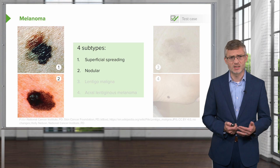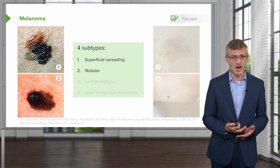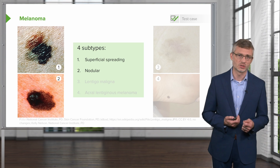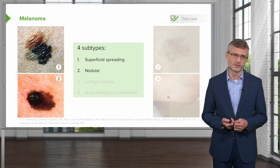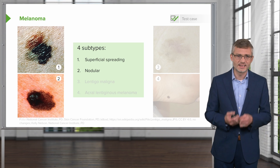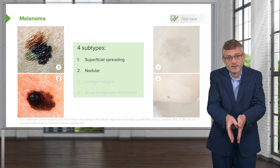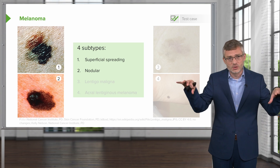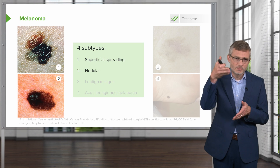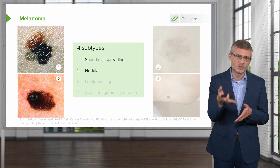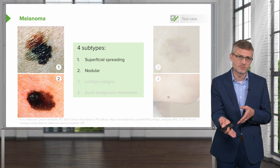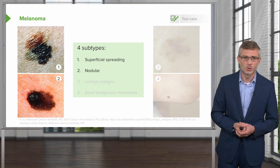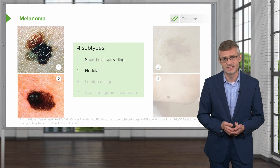The second most common is called the nodular type. The bad news about nodular melanoma is that it is penetrating and growing deep, or vertically, rather than horizontally. It tends to penetrate from the epidermis into the dermis more readily, and you're more likely to have either local or distant metastases.